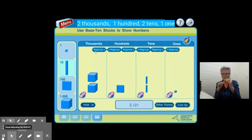I'm going to start by showing you the first representation, which is the picture that we have here. We have two in the thousands place, one in the hundreds, two in the tens, and one in the ones. So we have 2,121.